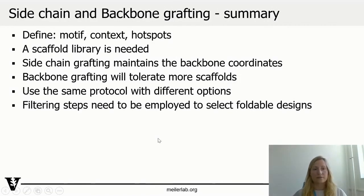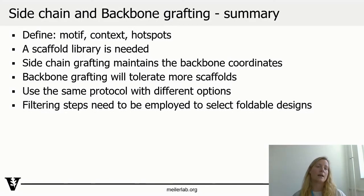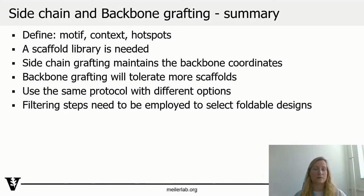To sum this up: we have to find motif, context, and hotspots, which is very important in these protocols. A scaffold library is necessary — you can create one or search for scaffolds with different options. Sidechain grafting really maintains the backbone coordinates and is likely to keep the backbone geometry correctly. Backbone grafting will tolerate more scaffolds and is more versatile. It basically uses the same mover in the protocol but with different options. In both cases, analyzing and filtering steps are very necessary and should be employed to select foldable designs.